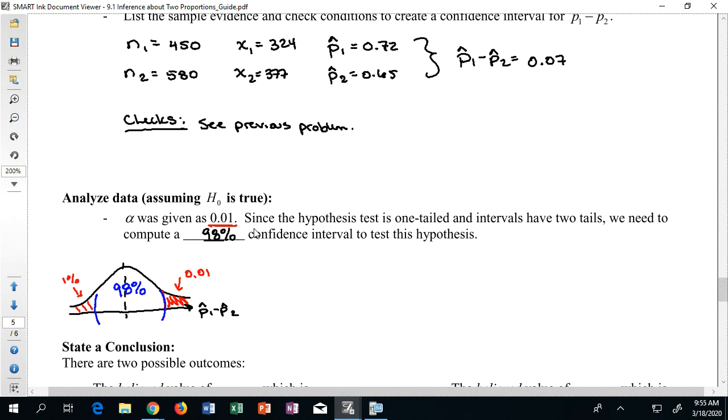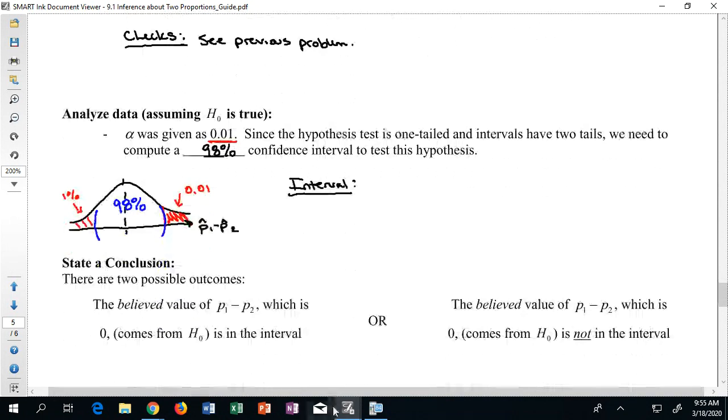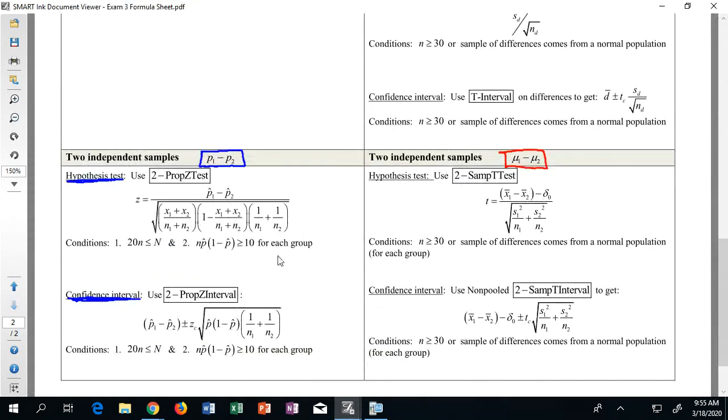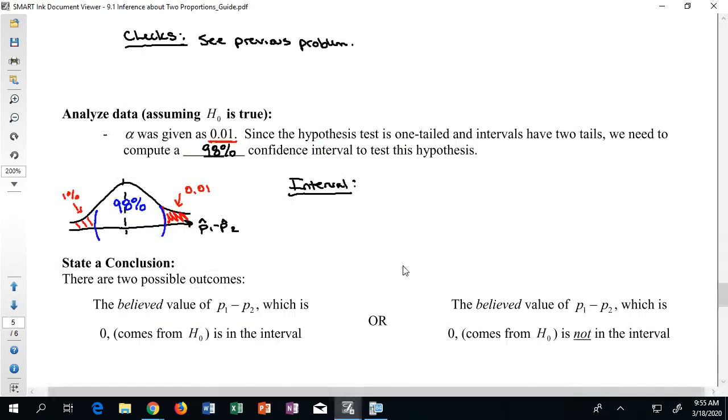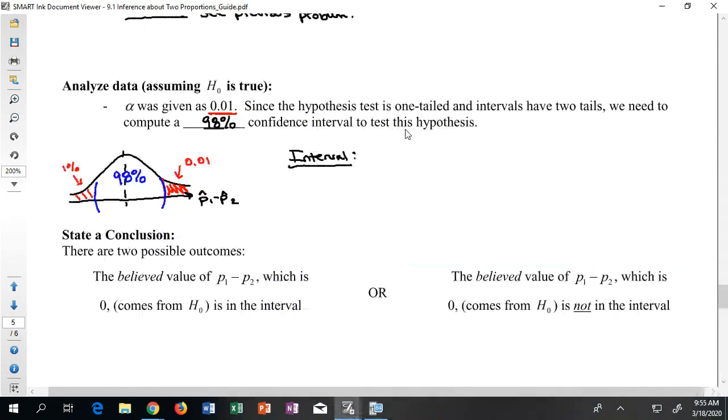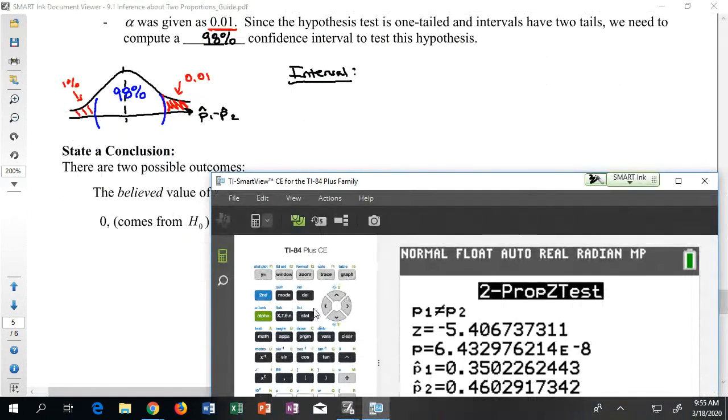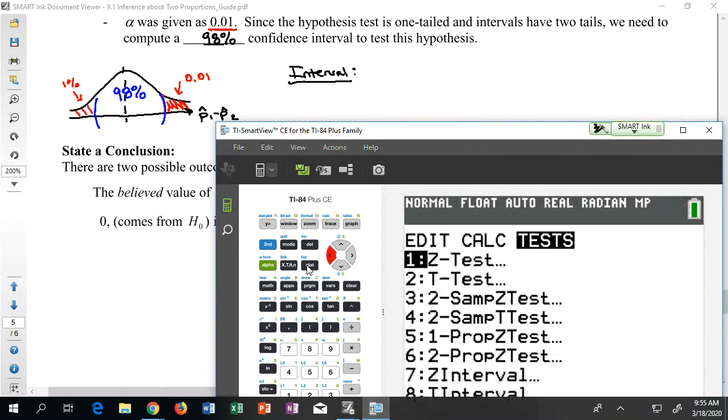When I try to construct my interval, I can look on the formula sheet to see what calculator command I'm interested in using. The formula sheet says that if I want to do a confidence interval, I checked all these checks. This is how the interval gets constructed, but here is ultimately the interval command: I want a 2 prop Z interval.